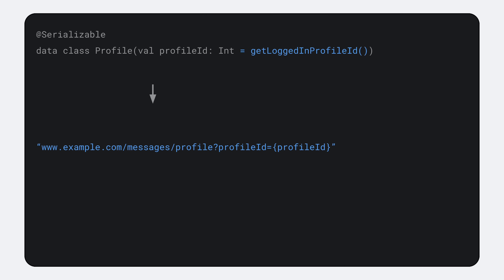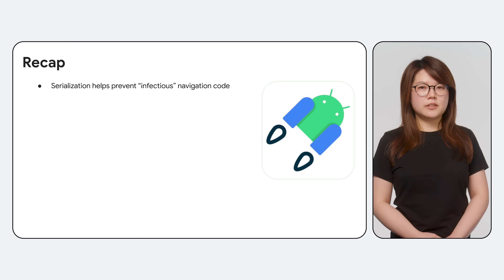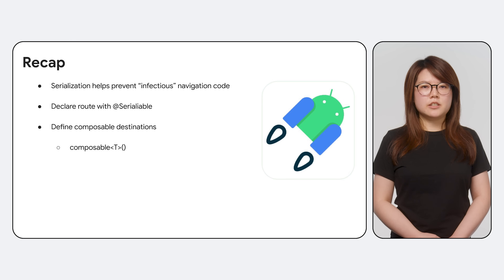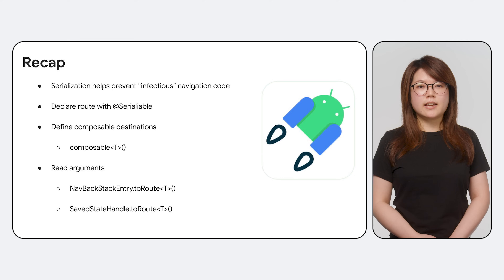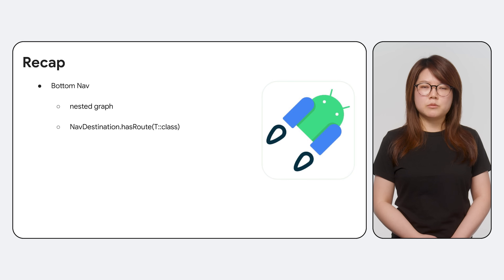The APIs we discussed today should set you off to a good start with navigation type safety in Compose. To recap: we talked about how type safety based on serialization helps prevent infectious navigation code. We discussed how to declare your route with the @Serializable annotation and how to define composable destinations with the composable API while passing in its route through the type parameter. We went through reading arguments with the new toRoute APIs for NavBackstackEntry and SavedStateHandle. We also talked about setting up your bottom nav by leveraging nested graphs and the NavDestination.hasRoute API. Lastly, we saw examples on how to add deep links.